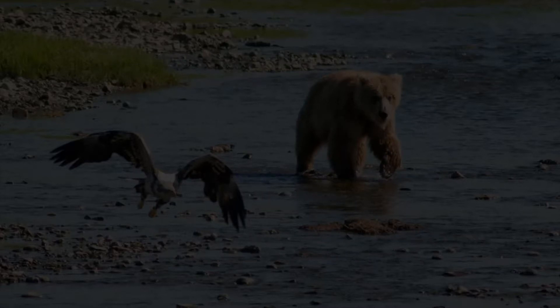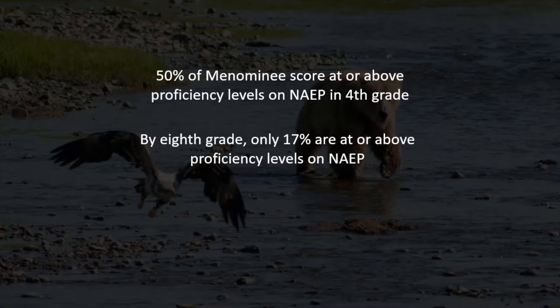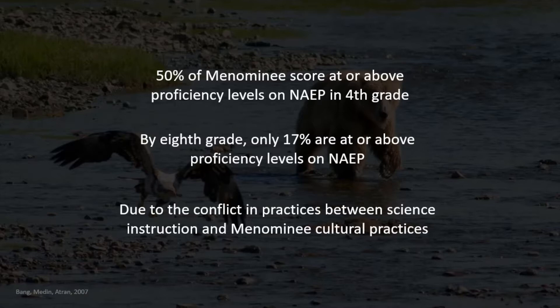Menominee children are precocious in terms of an ecological orientation, and 50 percent score at or above proficiency levels on NAEP's 4th grade science test, compared to the national average of 29 percent. However, by 8th grade, only 17 percent score at or above proficiency levels on NAEP, compared to the national average of 27 percent. Scholars posit that the disparity between children's biology knowledge and their science test performance as they get older is due to the conflict in practices between school science instruction and Menominee cultural practices — in other words, a disconnect between children's sensemaking and the target disciplinary knowledge.